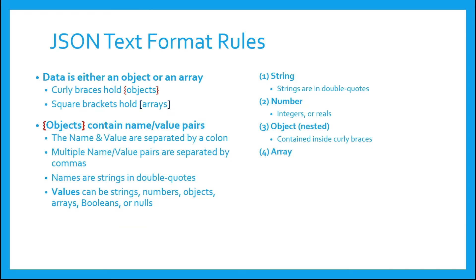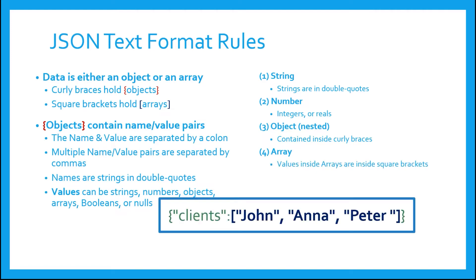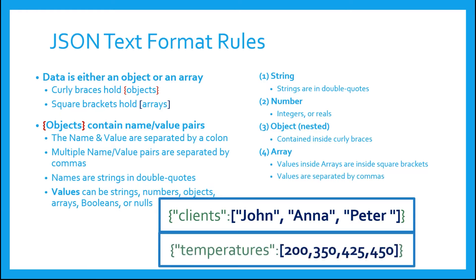The fourth value type is a JSON array. Arrays are contained inside square brackets, as mentioned earlier, and the values are separated by commas. Notice in the first example, the JSON object has a name, clients, but the value of clients is an array of strings: John, Anna, and Peter. In the second example, the JSON object's name is temperatures, and its value contains an array of integers.